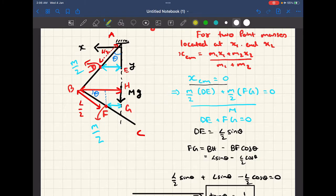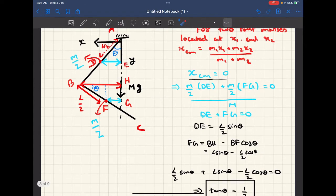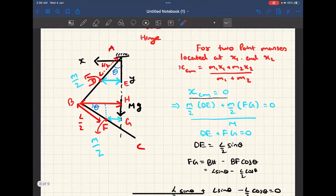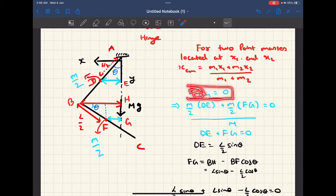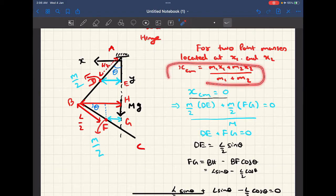So moving forward, if we say the x component of center of mass is zero, we just need to use this formula now. So m1, in this case I've taken it to be this m by 2 mass, so the x coordinate of this mass from our axis is D.